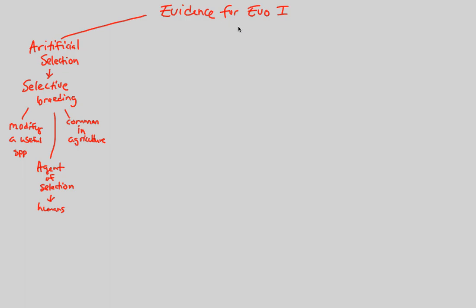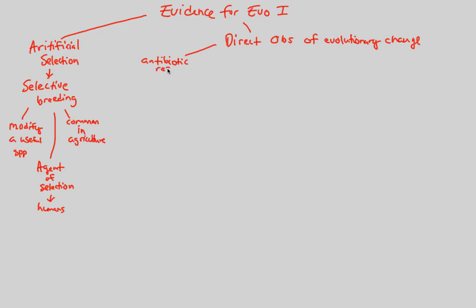In addition to artificial selection, we have direct observations of evolutionary change — things we actually see that tell us evolution certainly does happen, exactly the way Darwin says. One of the most obvious examples, and something really important in medicine today, is antibiotic resistance. Bacteria are living things exposed to environments, and they have to evolve — they have to adapt to environments.